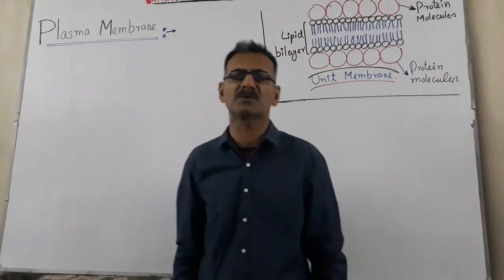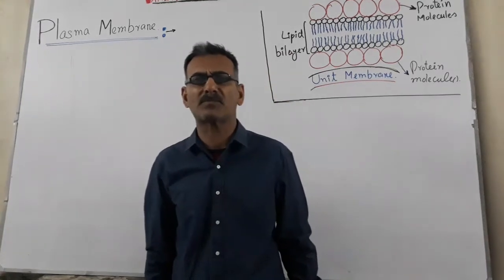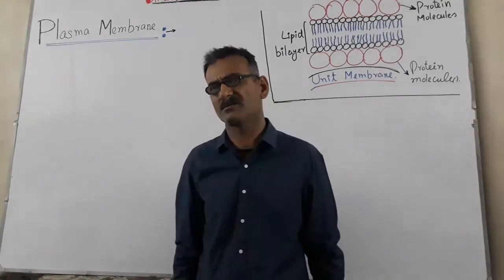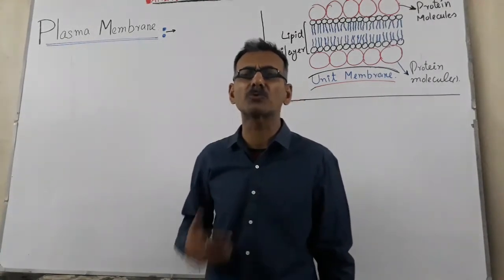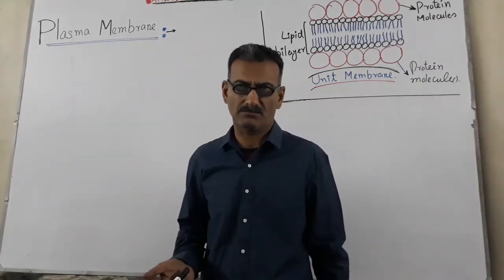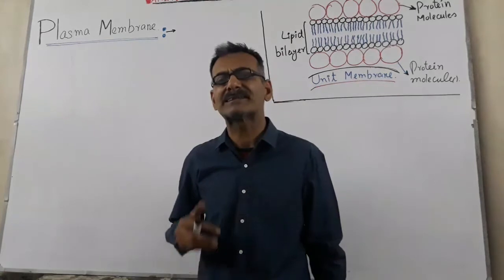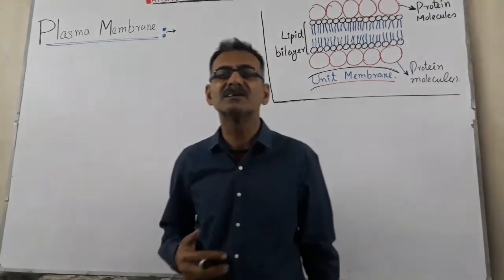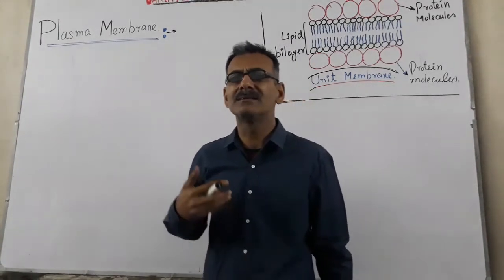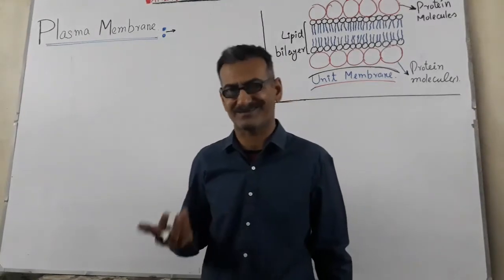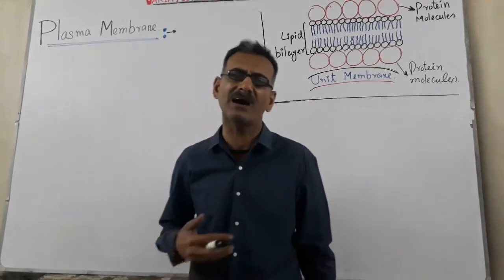In the name of Allah the gracious the most merciful. Students, today we will discuss about cell membrane — our plasma membrane and its structure. Plasma membrane is the outermost boundary which is present in the animal cell, but in the plant cell it is present inner to the cell wall. It is a thin and flexible membrane, also called semi-permeable membrane or selectively permeable membrane, because it selects some molecules to pass through it and rejects other molecules.